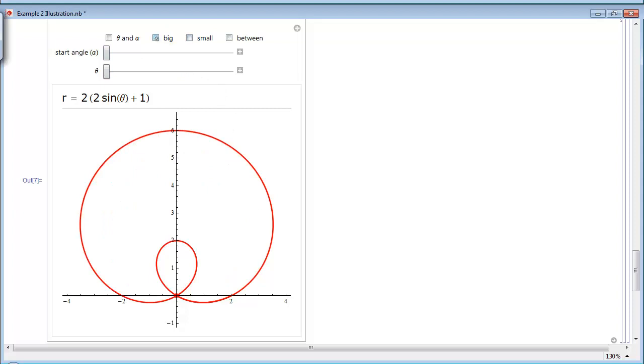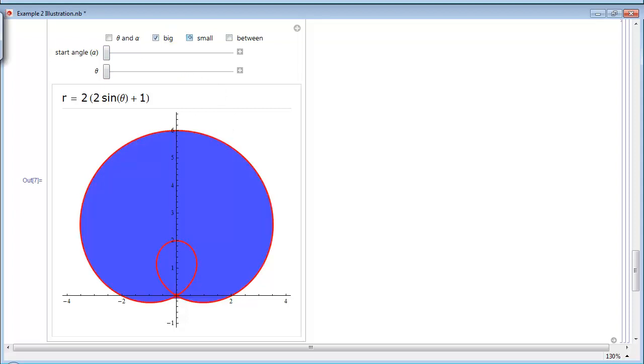We need to calculate the area enclosed by the outer loop and then subtract the area enclosed by the inner loop. This would give us the area that we're looking for, what's in between.